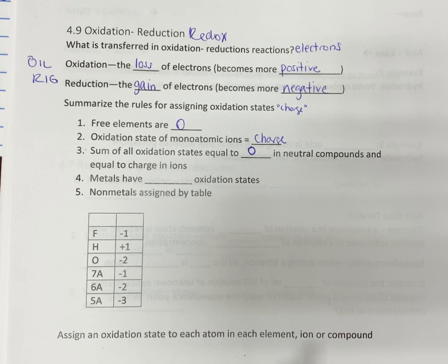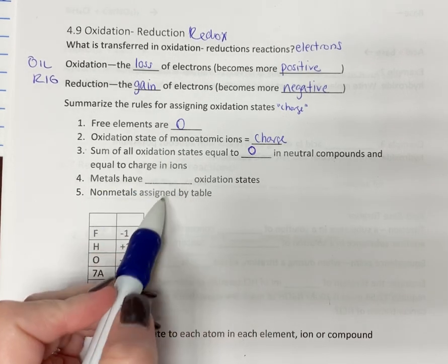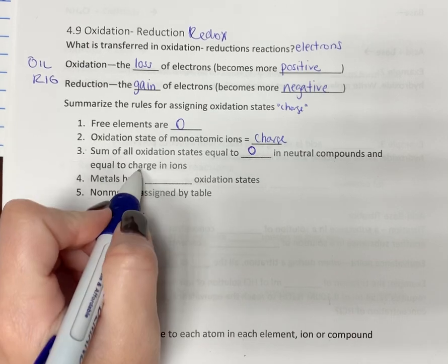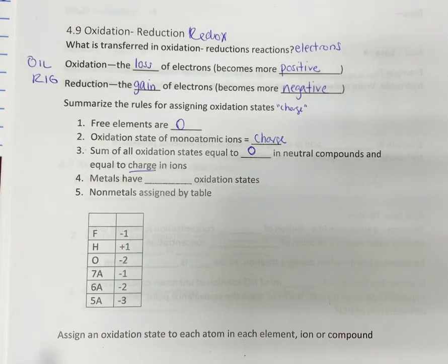If you have a polyatomic ion, all the oxidation states add up to equal the overall net charge. I know this can sound very confusing, but we're going to practice this and it'll get a little bit better.